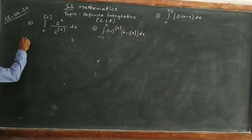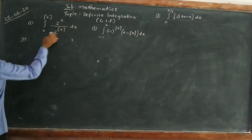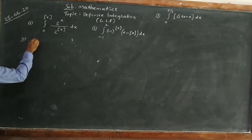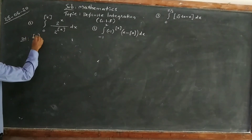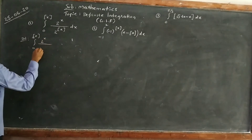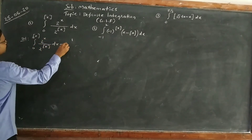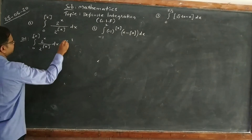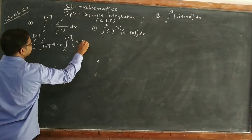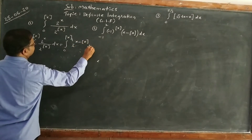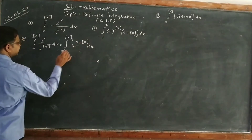First problem: integral from 0 to [x] of 2^x divided by 2^[x] dx. I can write this as 2^(x - [x]) dx, because a^m divided by a^n equals a^(m-n).